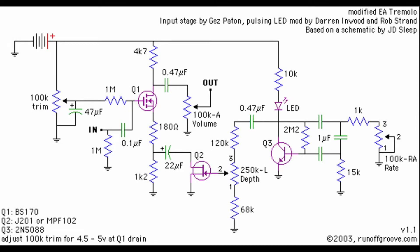Welcome back everyone. Today we're taking a look at another kind of modulation — this time amplitude modulation instead of frequency-based modulation. When we talk about amplitude modulation, we usually are talking about tremolo. The idea behind tremolo is to have our signal vary up and down in level based on an LFO. The LFO speed governs how quickly it moves up and down, and the LFO depth governs how much it goes up and down.